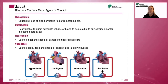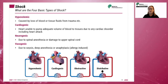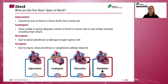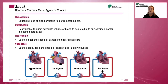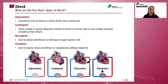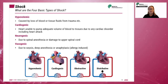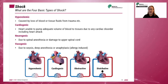The four basic types of shock are: hypovolemic shock, caused by a loss of blood or tissue fluids from trauma, for example; cardiogenic shock, when the heart is unable to pump adequate volume of blood to tissues due to a cardiac disorder, including a heart attack; neurogenic shock, which is due to spinal anesthesia or damage to the upper spinal cord; and finally vasogenic shock, which can be due to sepsis, deep anesthesia, or anaphylaxis, which is allergy induced.